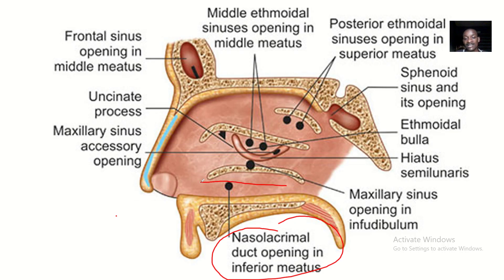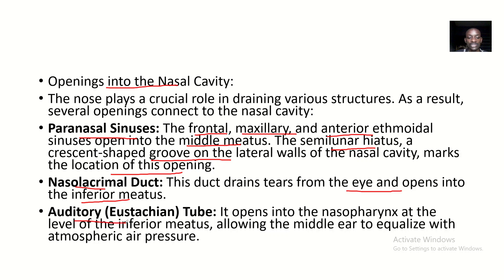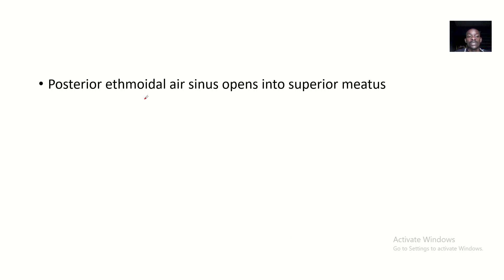Then we have the auditory tube, which also opens into the inferior meatus. It opens into the nasopharynx at the level of the inferior meatus. This allows it to balance the air pressure between the ear and the nose, which is very important.